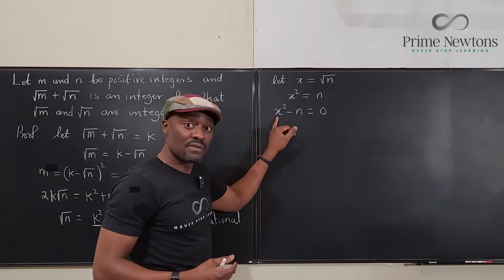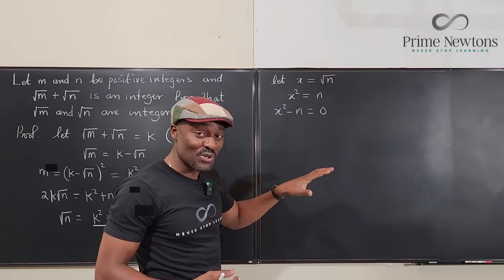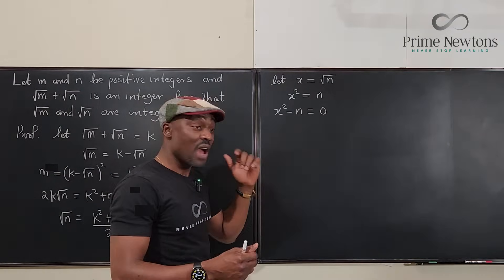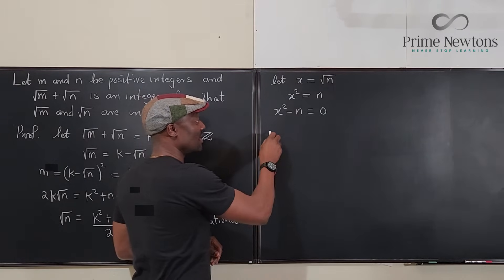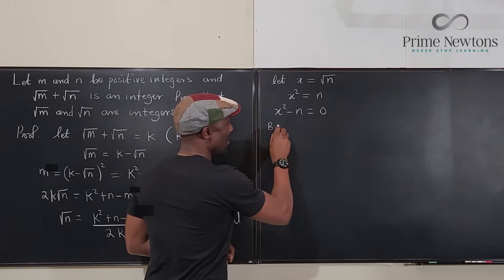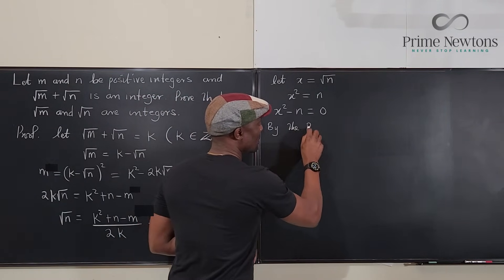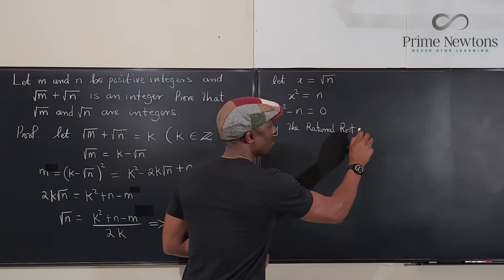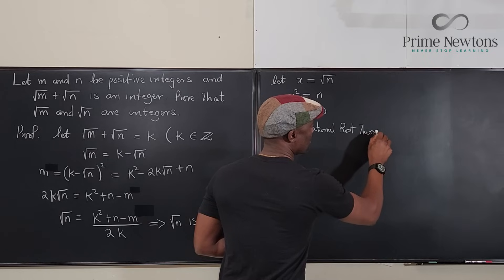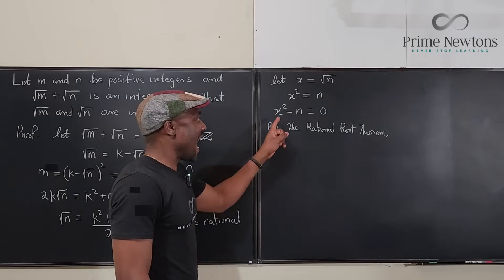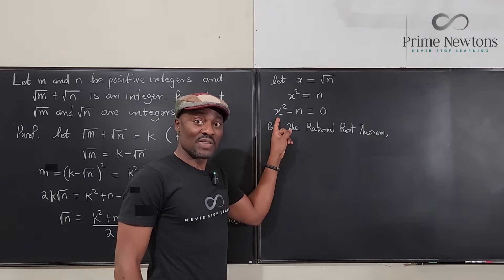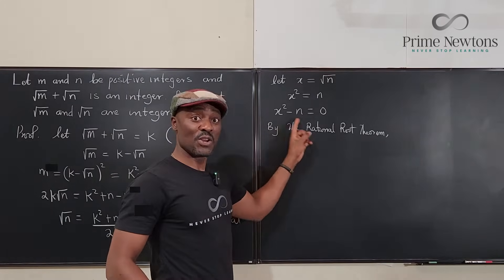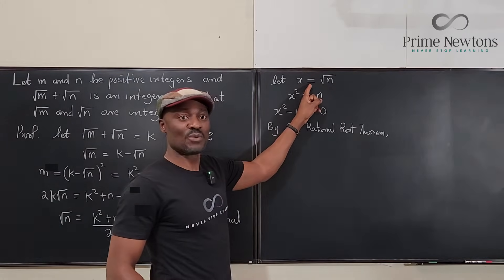In solving for x let's introduce the rational root theorem. What does it say? It says if you have a polynomial with the leading coefficient, by the rational root theorem anything that's going to be rational that is the root of this equation. By the way, one of the solutions to this polynomial equation is this. We already said it.